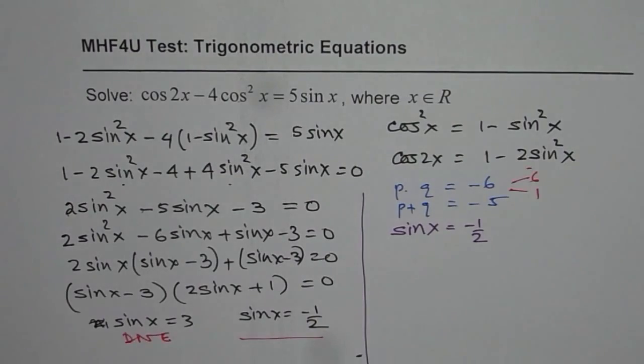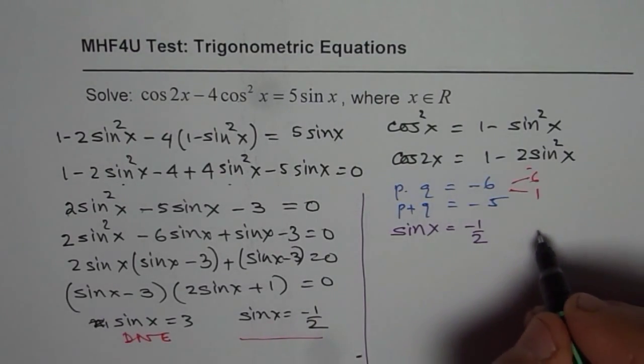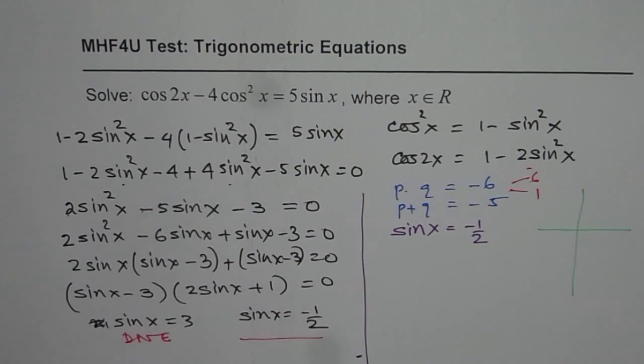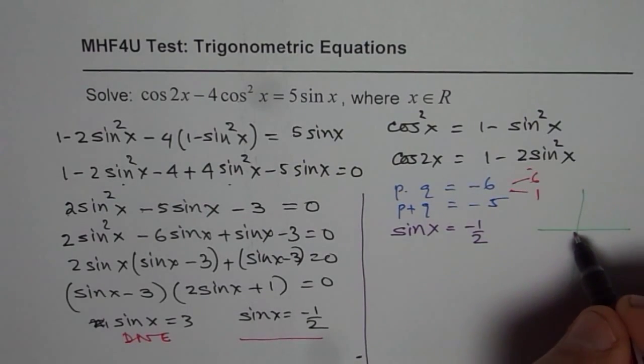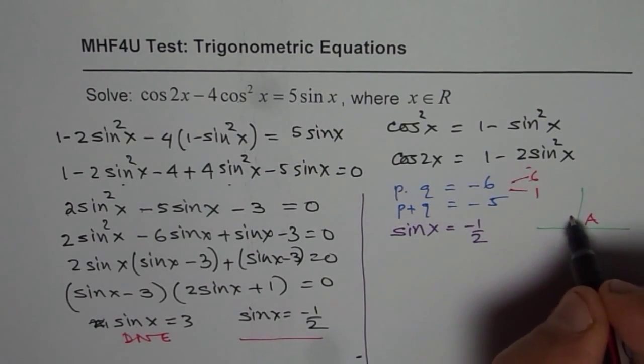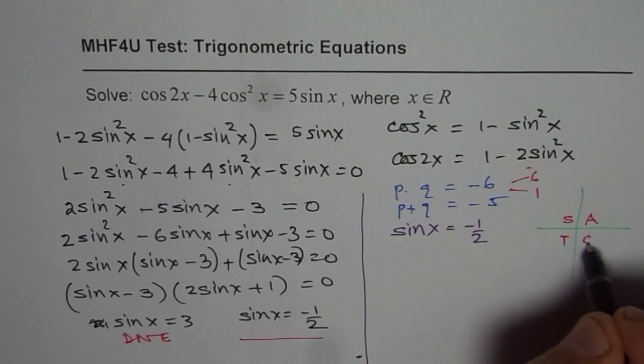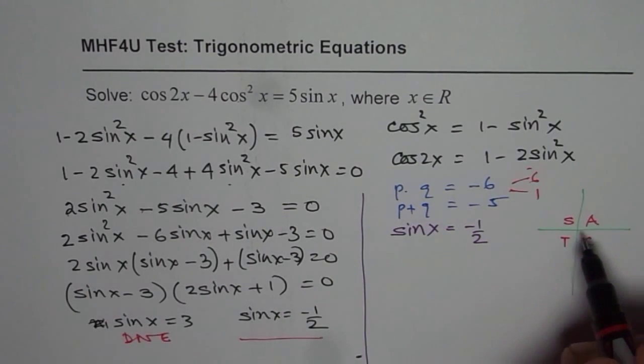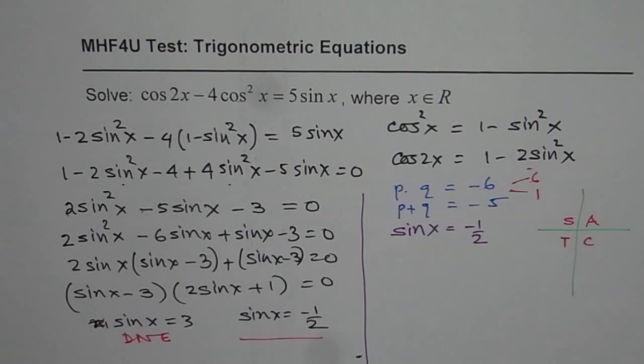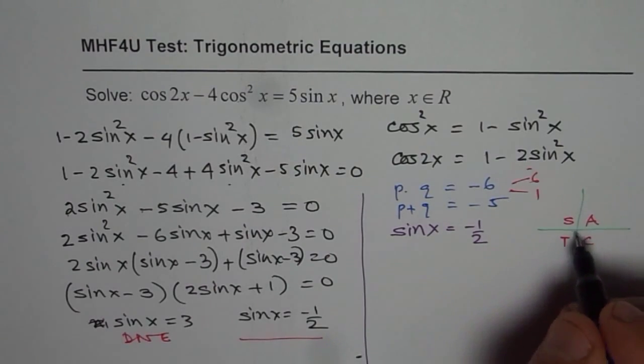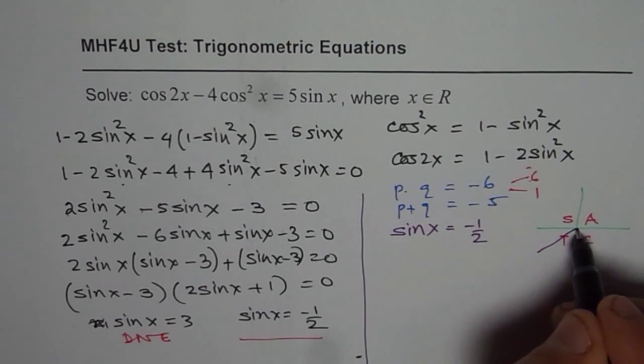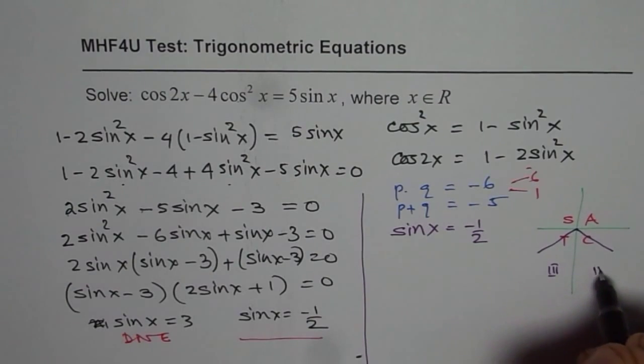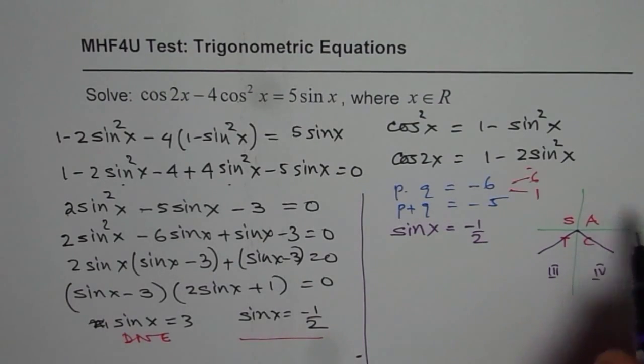When we say sine of x is minus half, we are really looking for two solutions. Let me write here all silver teacup or we can say CAST rule. So sine is actually negative in quadrant 3 and 4. So we are looking for two solutions which are in quadrant 3 or in 4 within 2 pi.